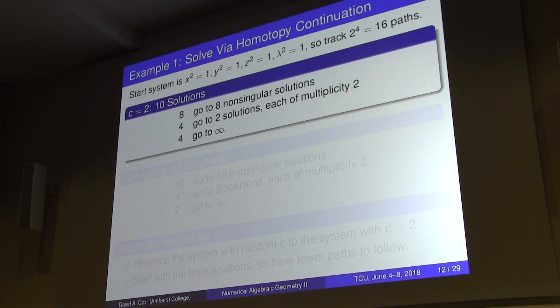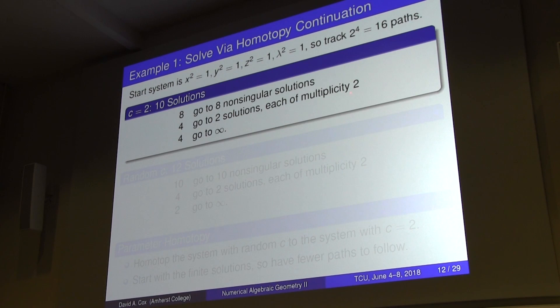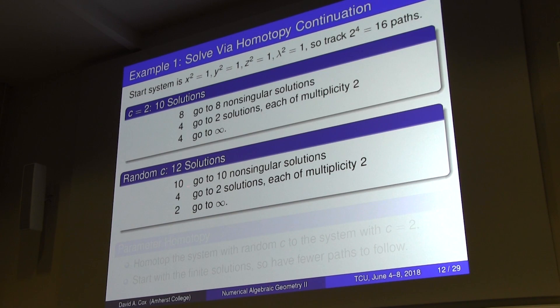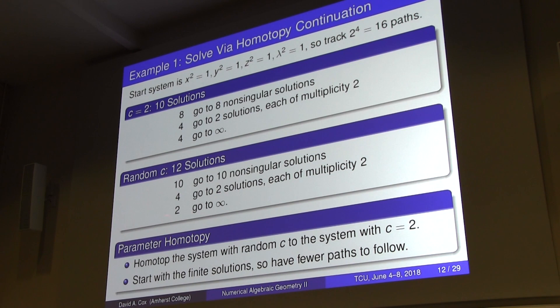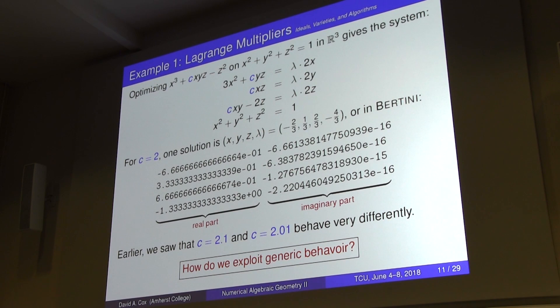If I ask Bertini to pick a random choice of C, I get 10 non-singular solutions, still some multiplicity-two solutions, and two paths going to infinity. The paradigm for using Bertini is to start with this random choice because that gives the generic behavior. I'm thinking of my system as depending on a parameter — there's going to be generic behavior over the complex numbers, and I want to capture that.